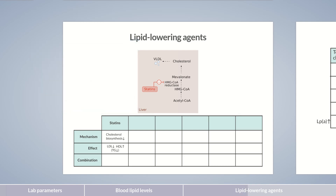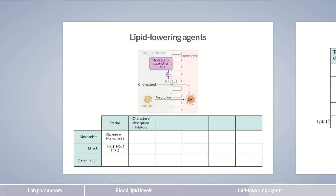Second-line lipid-lowering agents include cholesterol absorption inhibitors that reduce cholesterol absorption from food. One example is ezetimibe. It inhibits the NPC1L1 transporter in the enterocyte membrane, which is responsible for cholesterol absorption. Consequently, LDL levels decrease. Cholesterol absorption inhibitors can be used in combination with statins if the latter insufficiently reduce LDL levels. In such cases, both endogenous cholesterol production and intake from food are inhibited effectively.